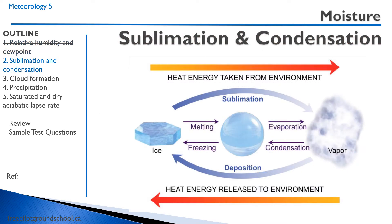If you remember back from elementary school science, when water goes from a solid to a liquid, we call that melting. It can also go in reverse — from a vapor to a liquid is called condensation, and when it goes to a solid, it is freezing. If the vapor goes directly to ice, we call that deposition, and from ice to vapor is sublimation. Pay particular attention to whether heat is taken from the environment or released into the environment.